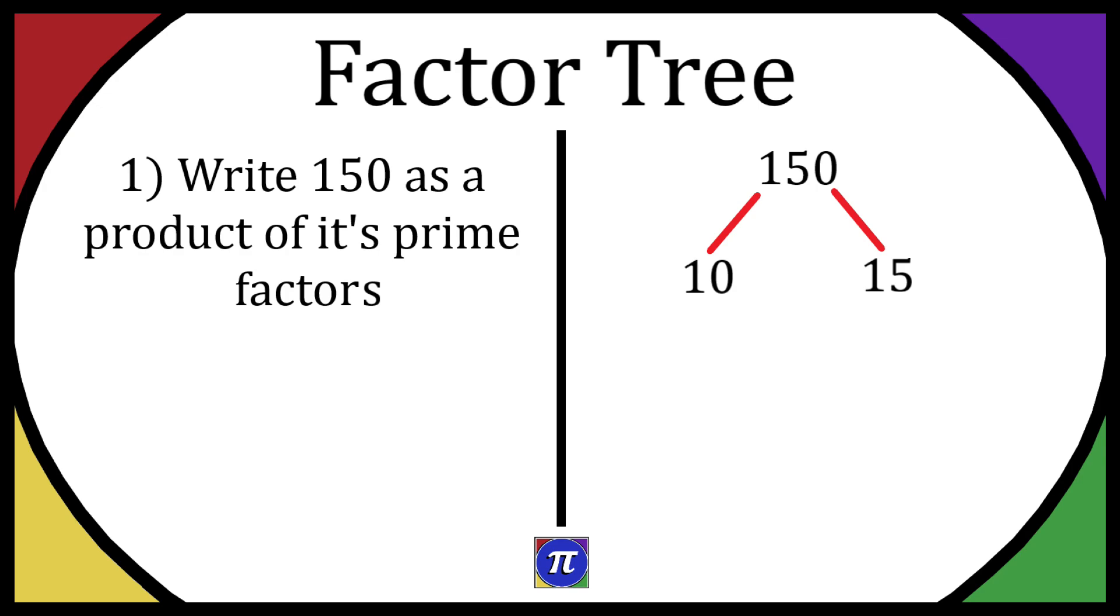So let's simplify them both down a bit more. 10 can be simplified to 5 times 2. Now these are prime numbers, so we put a circle around them to indicate they're prime numbers and they don't need to be broken down anymore. And 15 is going to be 3 times 5, and these are prime numbers also, so we put rings around them.